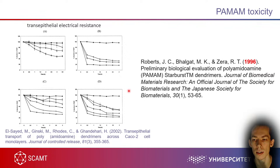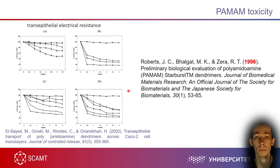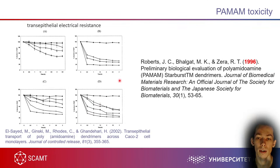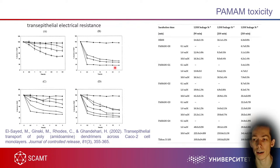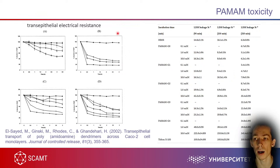Scientists showed that TEER can be drastically affected by PAMAM, and importantly, the effect differs by generation — the bigger the generation, the more toxic the dendrimer. This is somewhat expected: the bigger the generation, the more functional groups on PAMAM's surface, and the more interaction with cell membranes. If you look at LDH leakage — a lactate dehydrogenase assay — leakage means important molecules are leaving the cell, which is not a good sign.